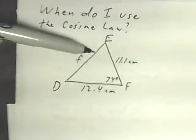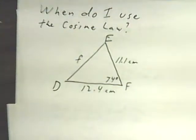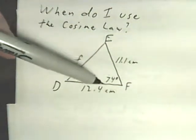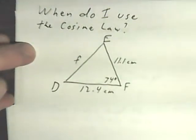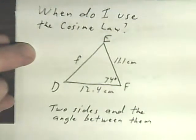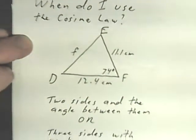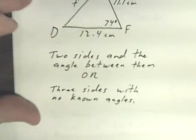Here I have a triangle that has no 90-degree angles in it. I have two sides and the angle in between those sides. So one situation you would use the cosine law is if you're given two sides and the angle between them. The other situation is if you're given three sides with no known angles.